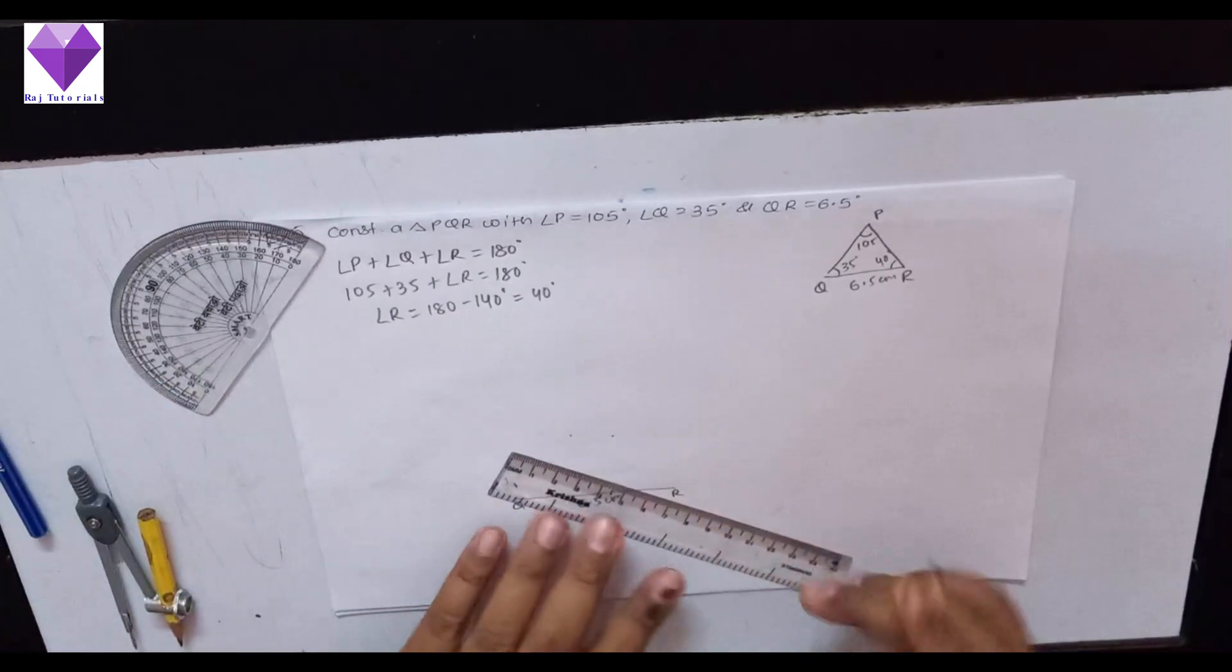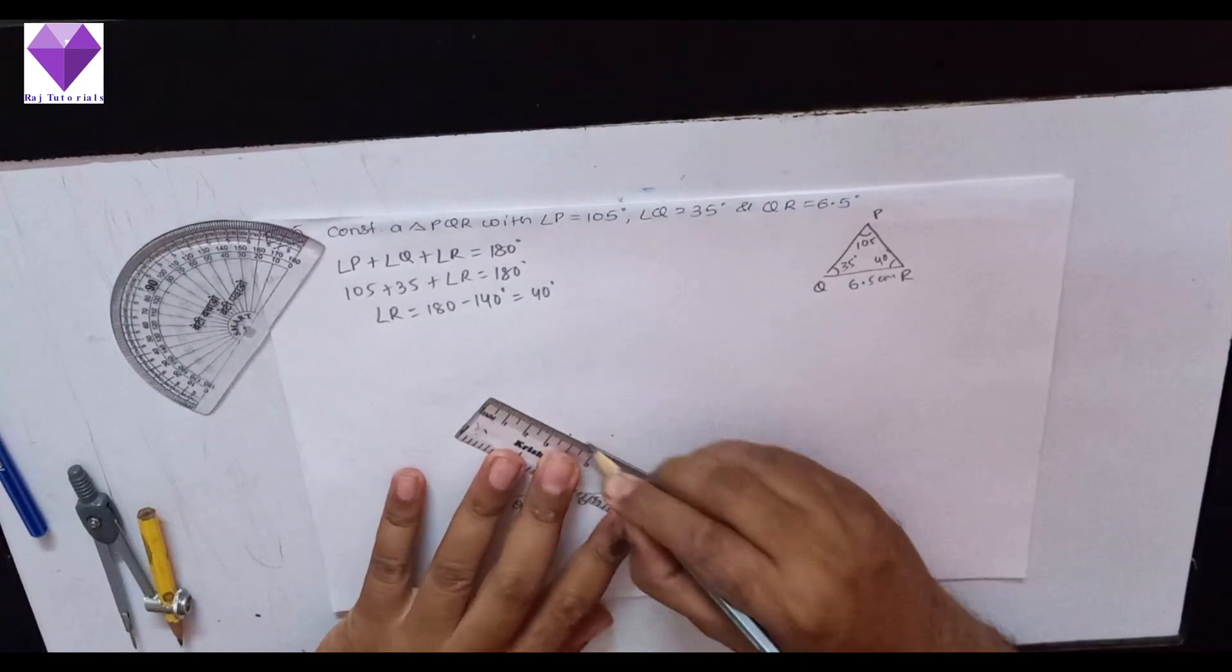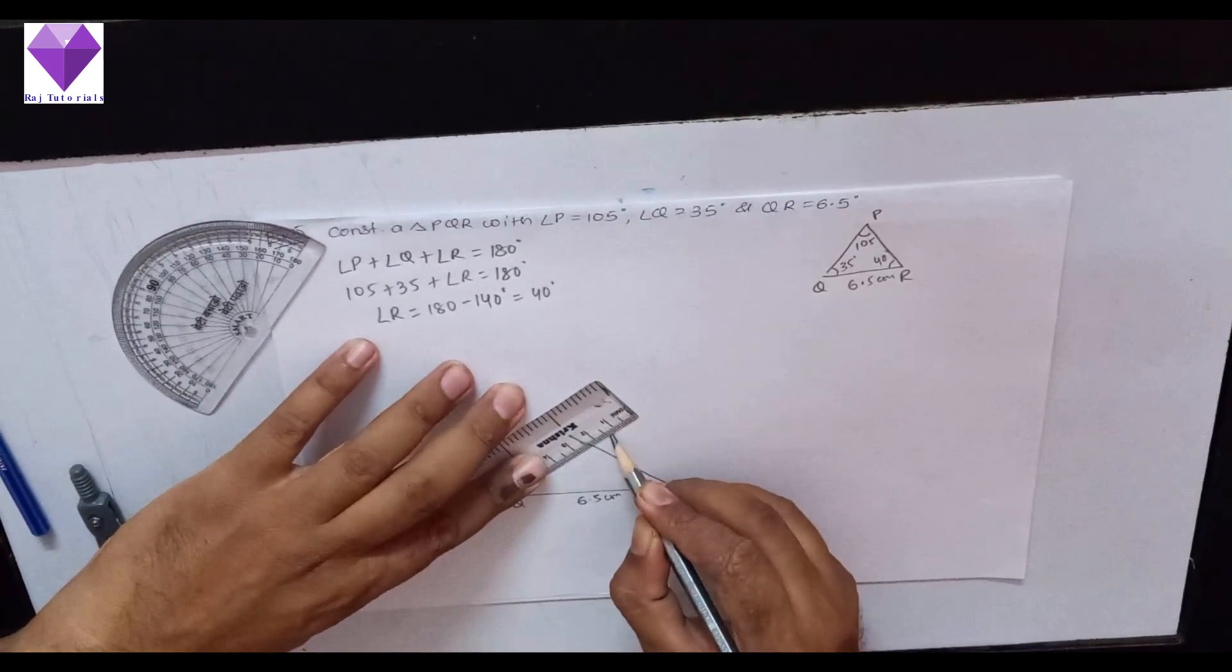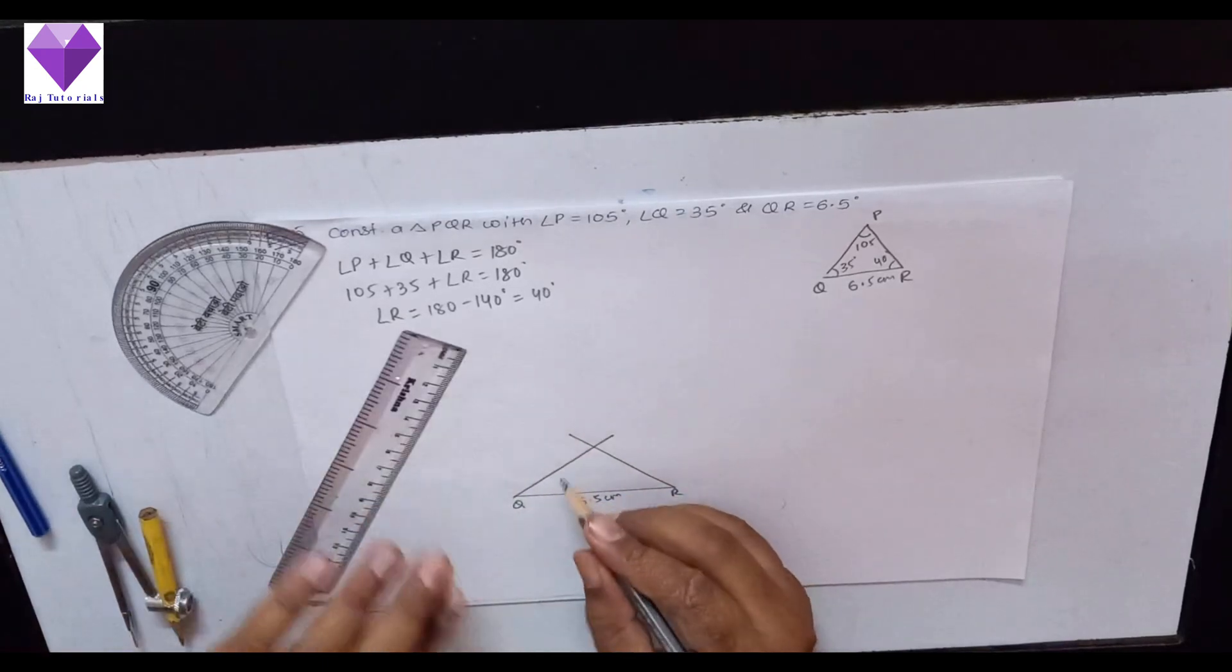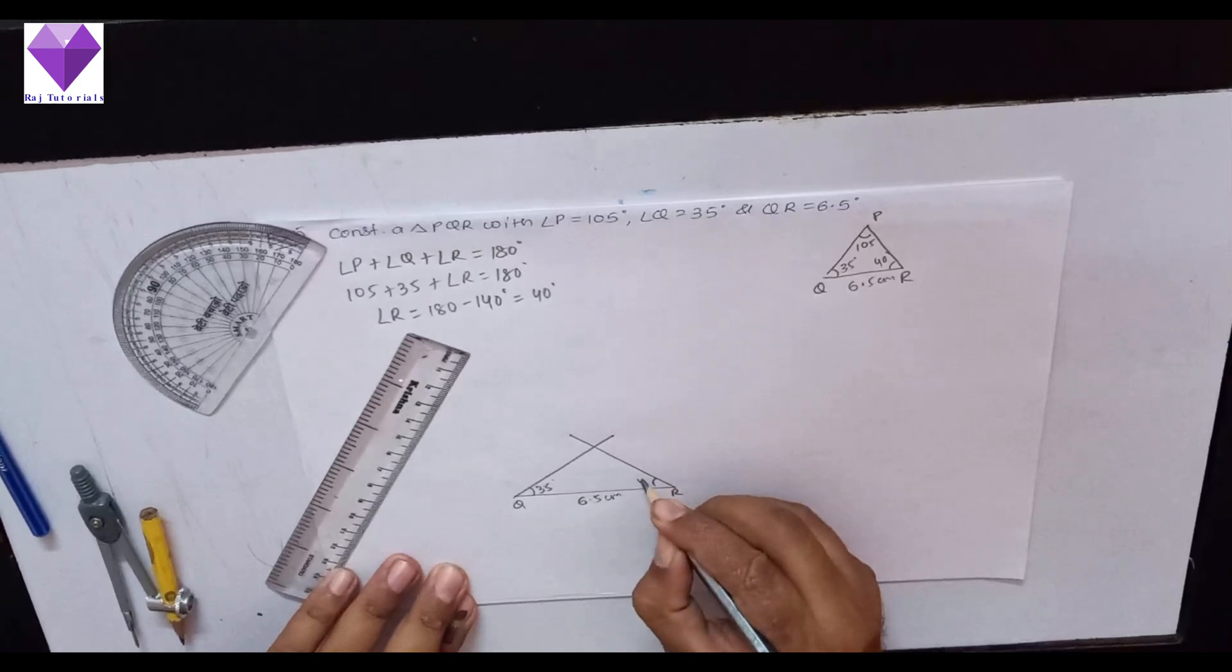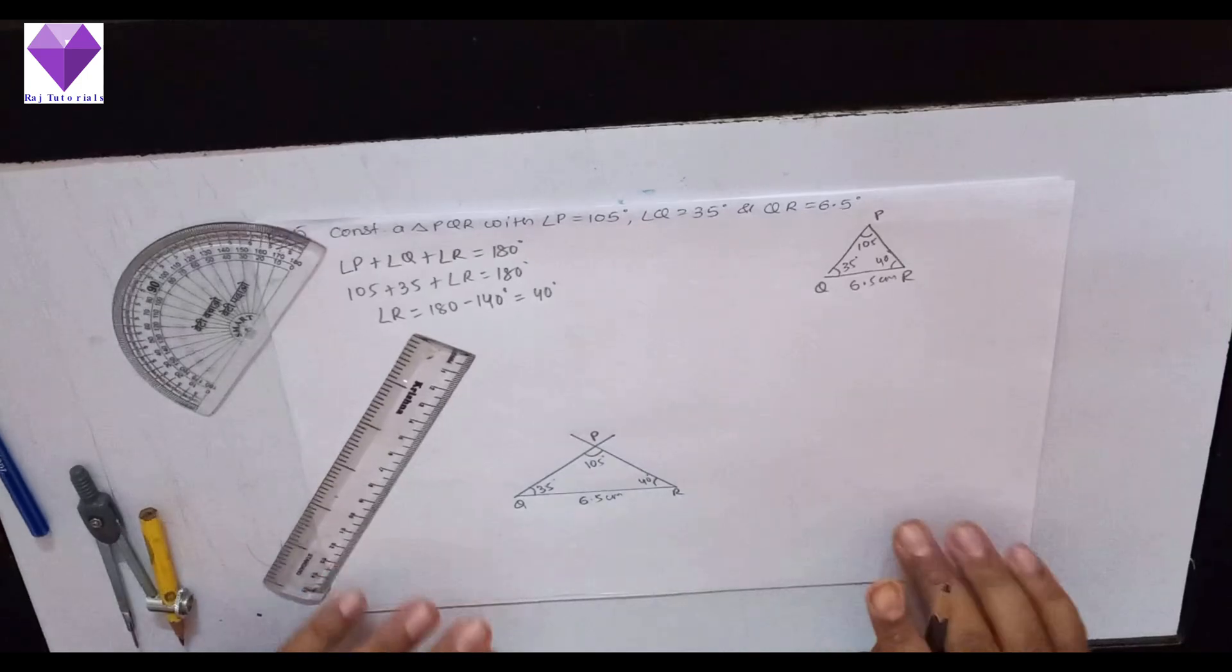Now, I will be joining R with the 40 degree angle point and Q with the 35 degree angle point. So, this is my 35 degrees, this is my 40 degrees, so automatically this will be my 105 degrees and this point is P.